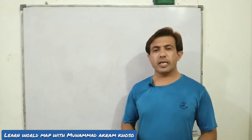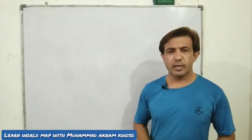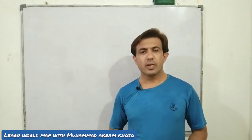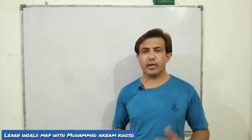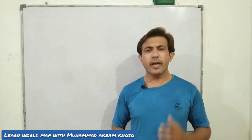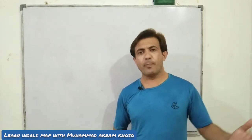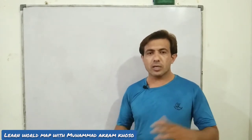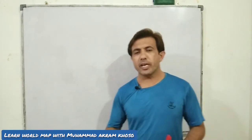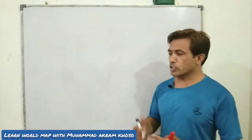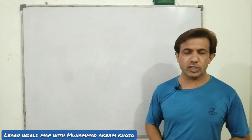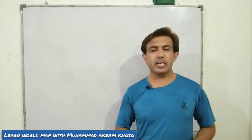Assalamu alaikum friends. In this lecture we are going to learn the map of Far East or East Asia — China, Mongolia, Japan, South Korea, North Korea, Taiwan. They were already called Far East. In fact, sometimes the Philippines and the eastern part of Russia were also counted as part of Far East. Well, China, Mongolia, Japan, North and South Korea, and Taiwan — they are called Far East, and today we call them East Asia.